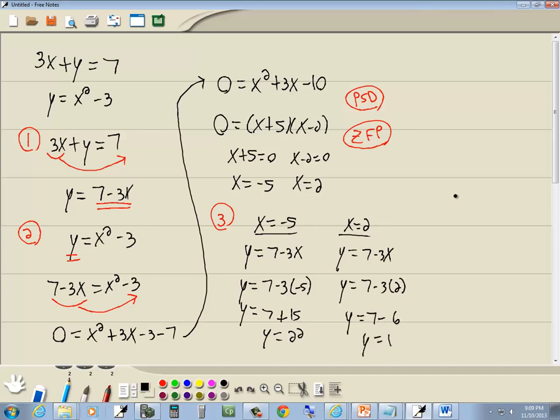So from x equals negative 5, we get negative 5, 22. And from 2, we get 2, 1. And those are our answers. If I plug those back in here, you'll see that both of those will check. Let me just do a quick double check on that. 15, yeah, both of them check. And those are our answers.